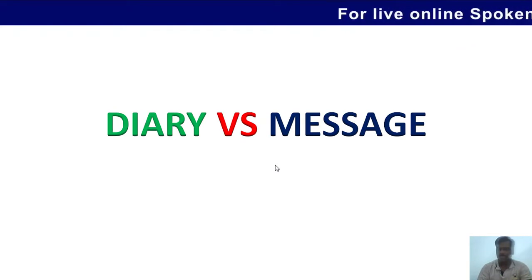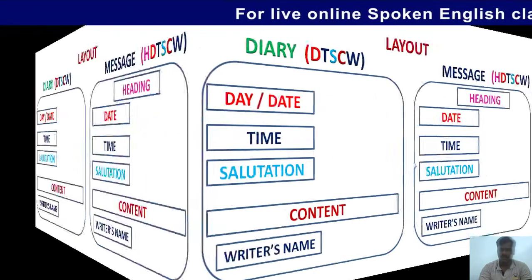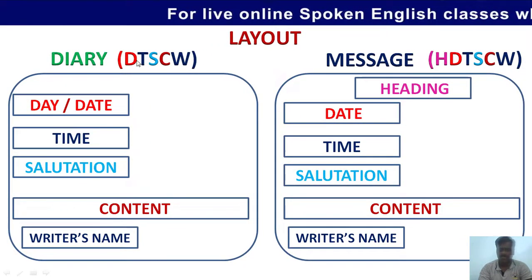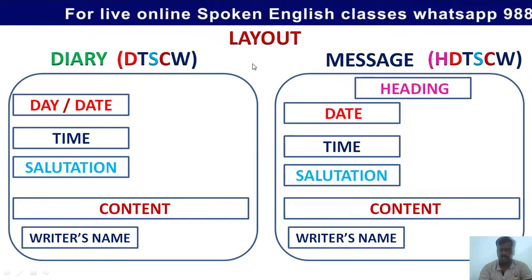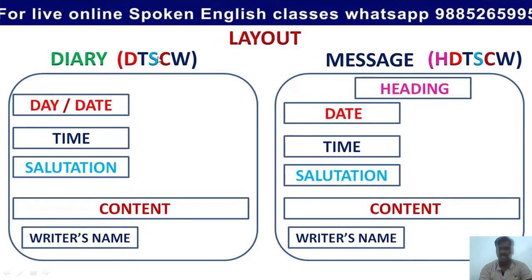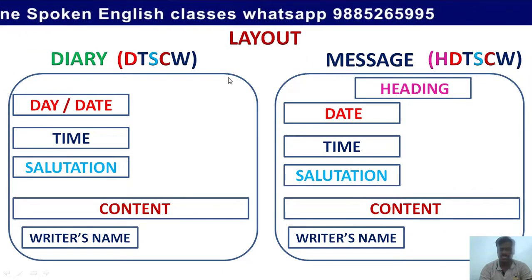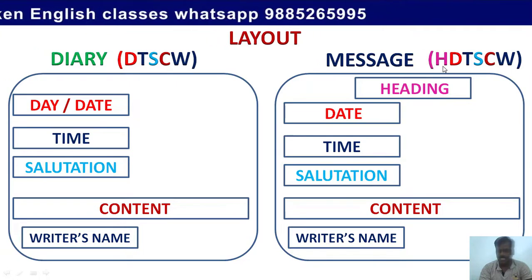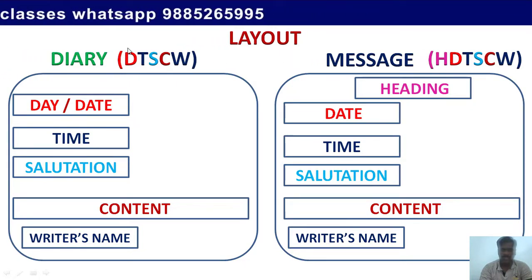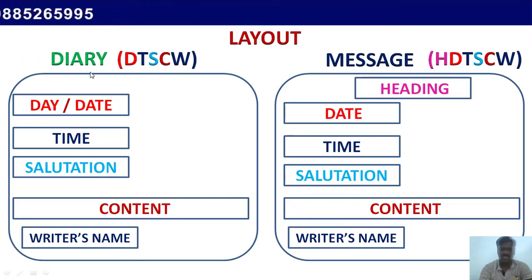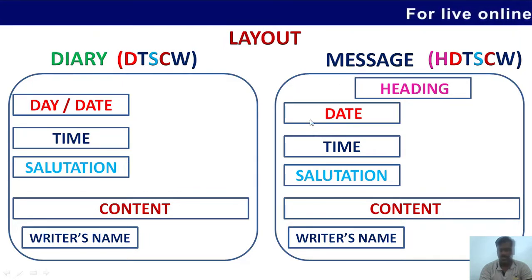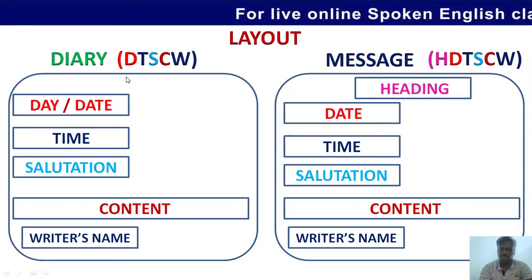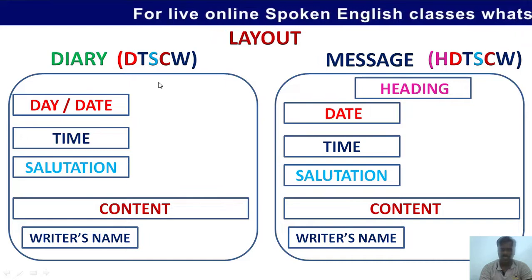Here we have the layout of diary and message. There are two differences between diary and message. The first difference is: in the message we have a heading, but in the diary we don't have the heading. The second difference is: in the diary we have the day, but in the message we don't have the day. Remember these two differences, follow this layout strictly, and score maximum marks.